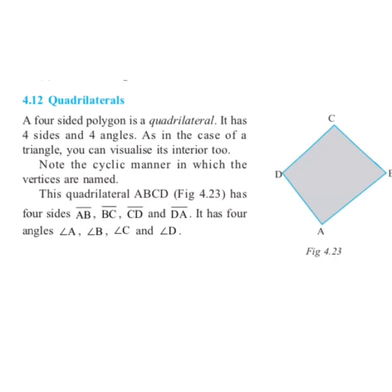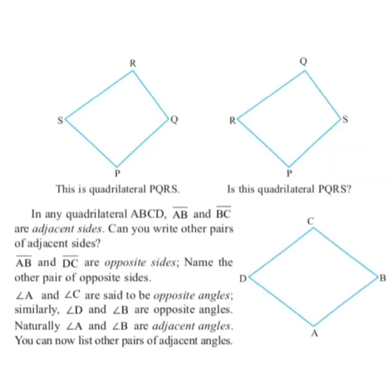As in the case of a triangle, you can visualize its interior too. You can see the dark portion of the quadrilateral — it is the interior of quadrilateral ABCD. Note the cyclic manner in which the vertices are named: vertex A, vertex B, vertex C, and vertex D.